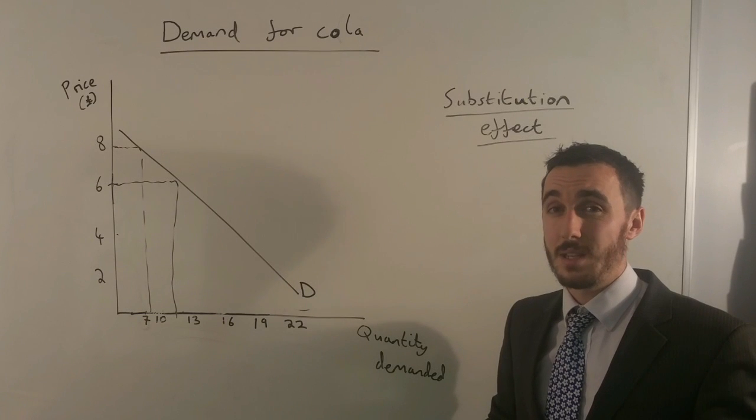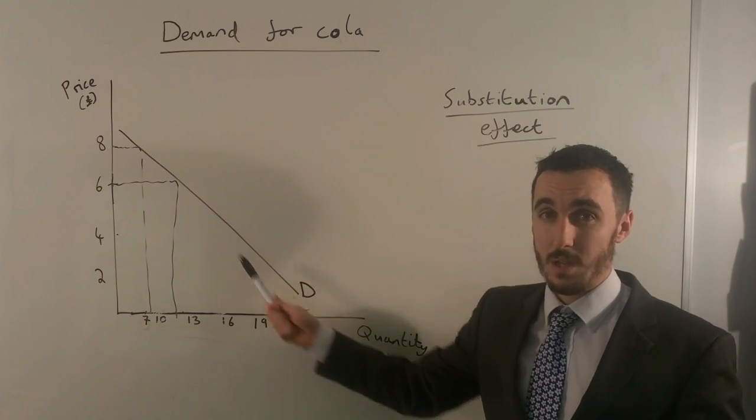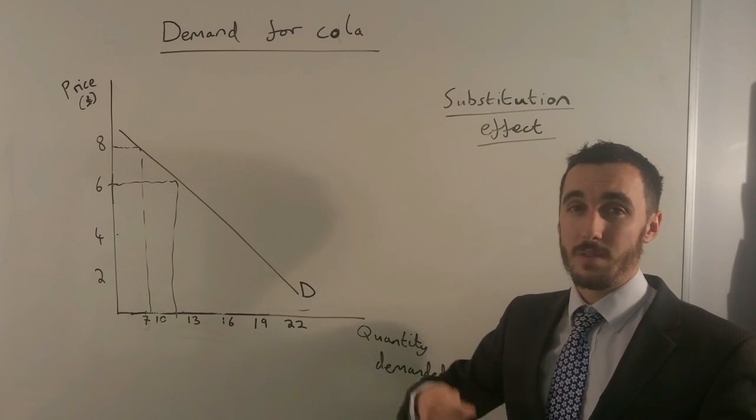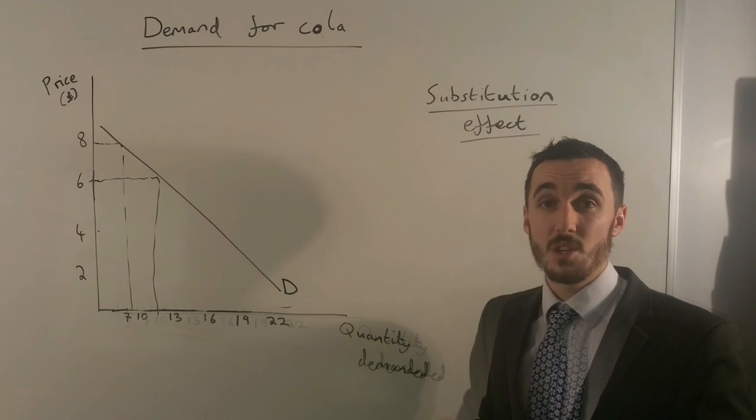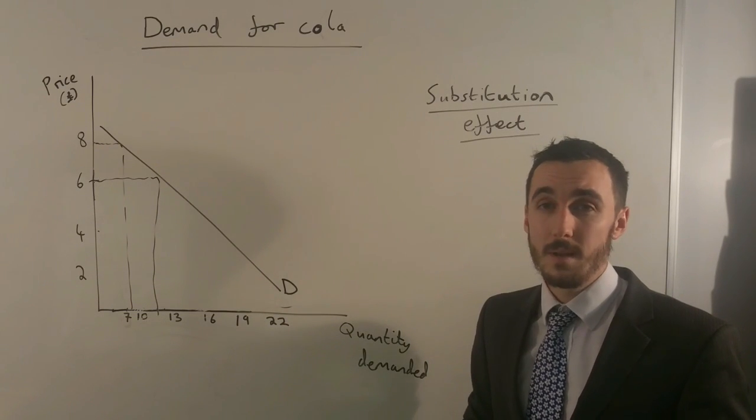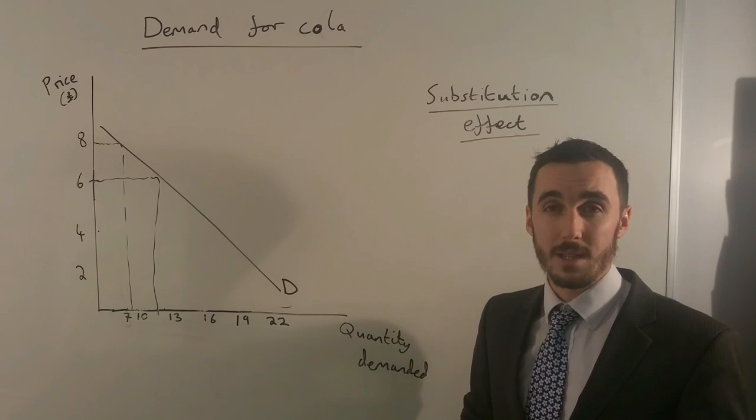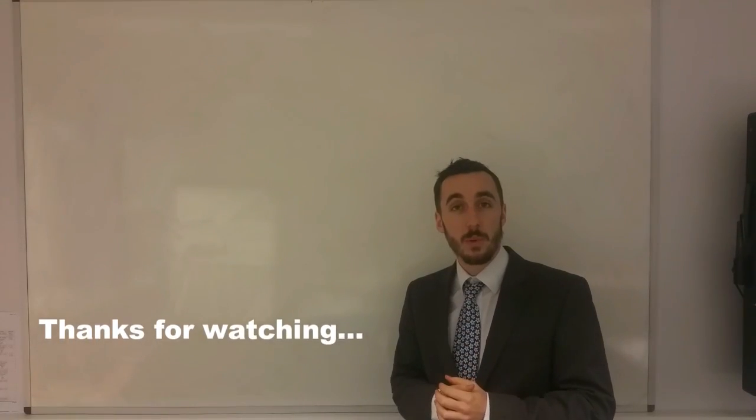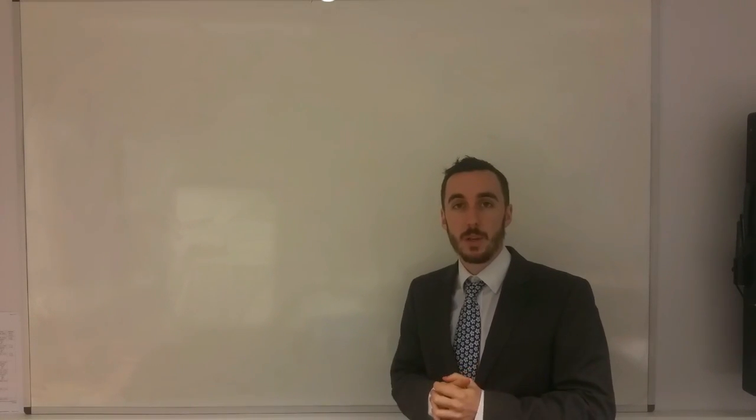So we have now seen why the law of demand is true, why demand is downward sloping and that's because of both the income effect and the substitution effect. These two concepts are really important to remember when thinking about the downward sloping demand curve and the reasons behind the law of demand. I hope you enjoyed the video, please like and subscribe below and comment for any other topics you want me to cover in my next videos.